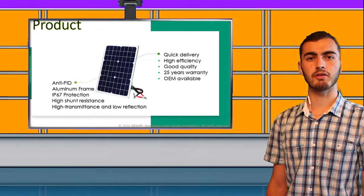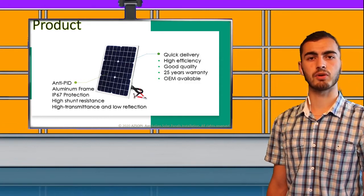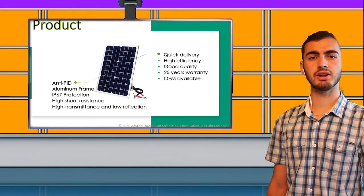About the features of our main product, solar panels are covered with aluminum frame, which makes our product more durable. IP67 protection for waterproof, high shunt resistance, high transmission and low reflection, anti-potential-induced degradation.